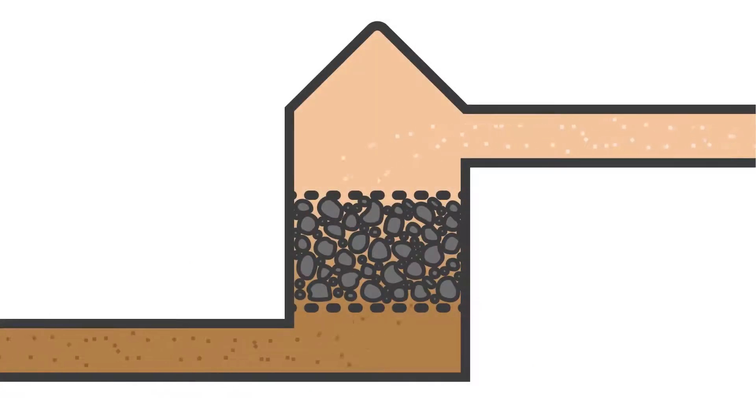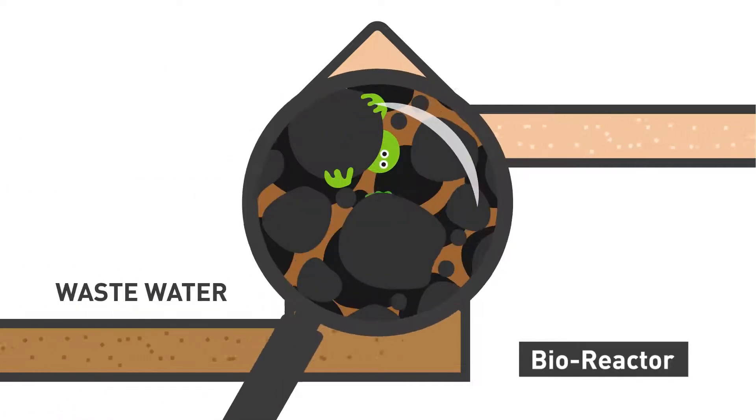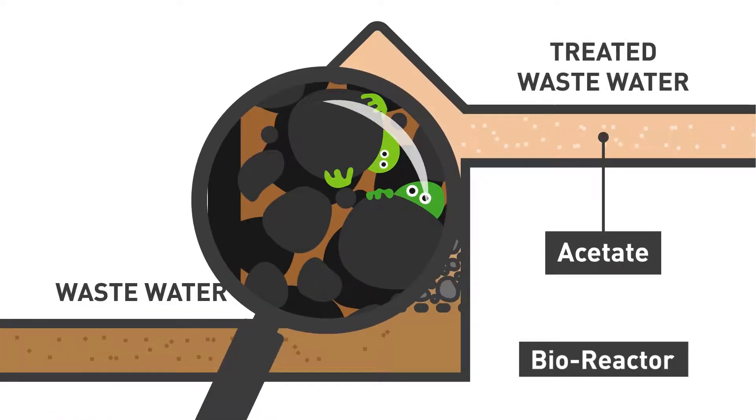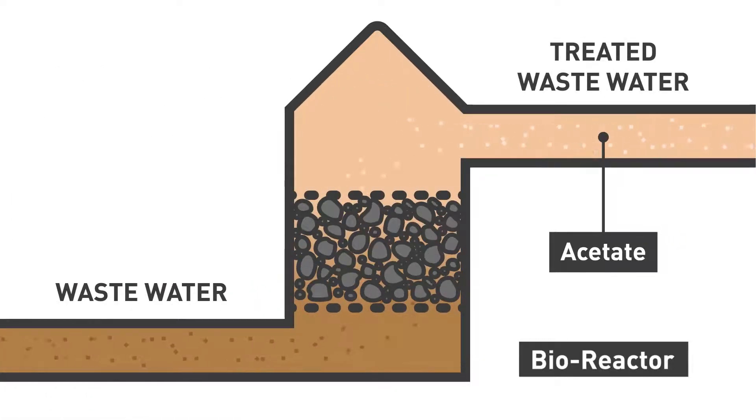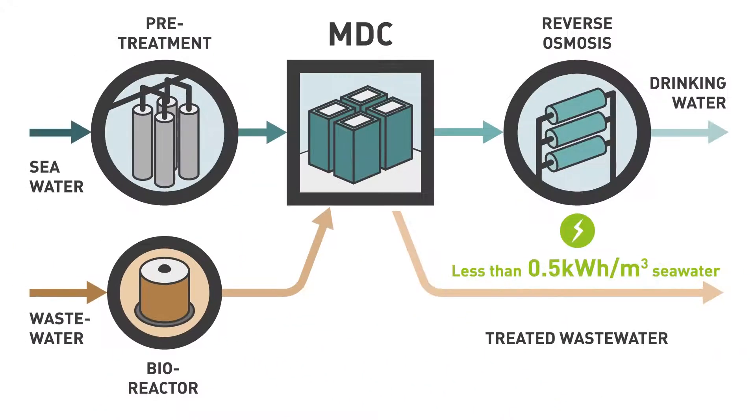In the MIDAS system, the accompanying treatment of wastewater is carried out in a bioreactor, which also uses microbes. Acetate that is produced in the bioreactor provides nutrients for the geobacter. The bioreactor combined with the MDC greatly reduces the need for an external energy source.